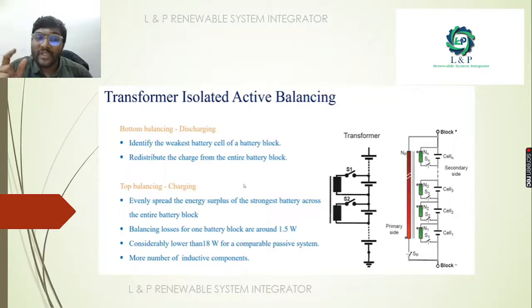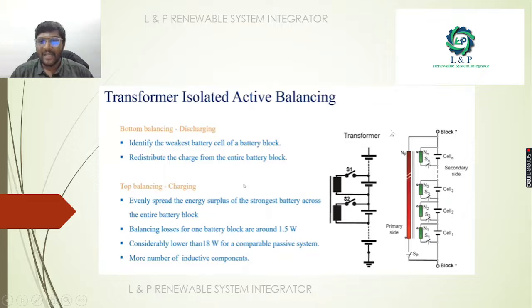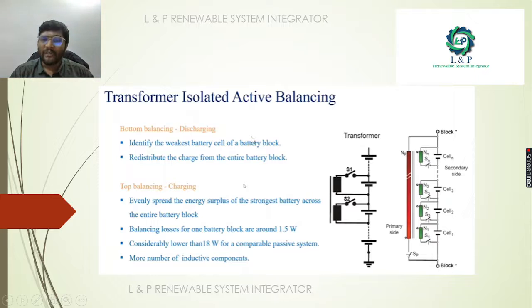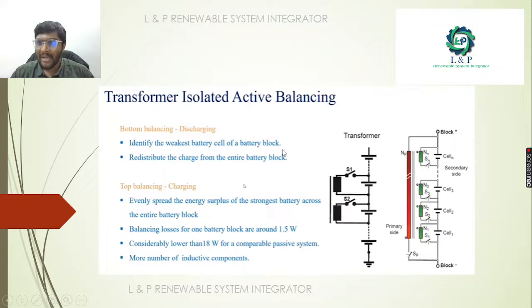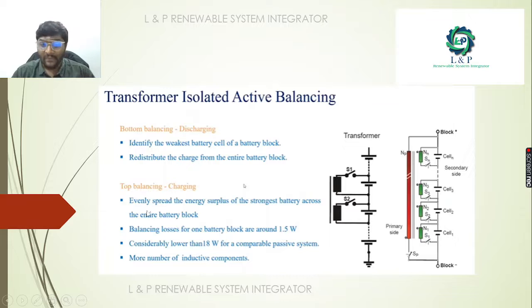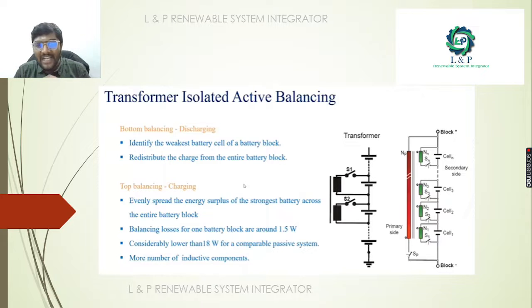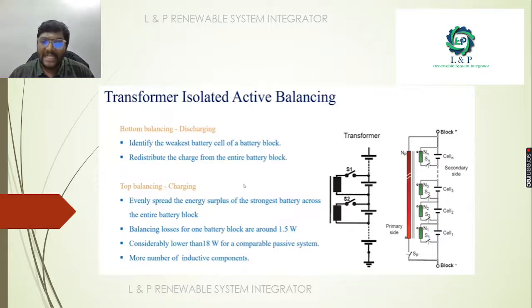Active balancing can also be performed using transformers — on the primary side we have the primary winding and on the secondary side we have the cells through switches. For discharging, bottom balancing is done: it identifies the weakest battery cell and redistributes the charge from the entire battery block. For top balancing, which happens during charging, it evenly spreads the energy surplus across the entire battery block. The losses for one battery block are around 1.5 watts, considerably lower than 18 watts for a comparable passive system, though it requires more inductive components.